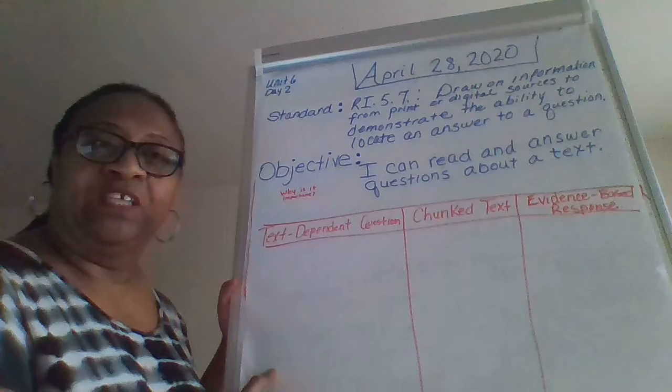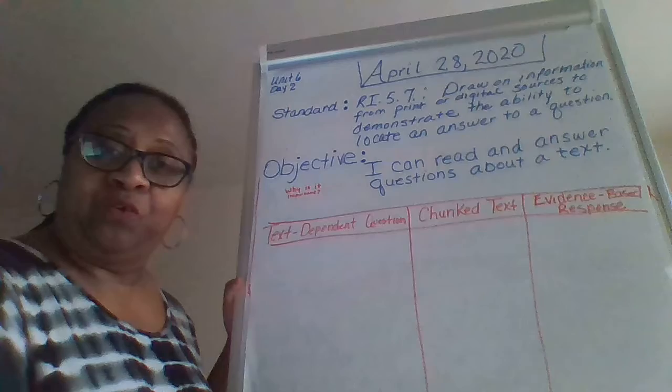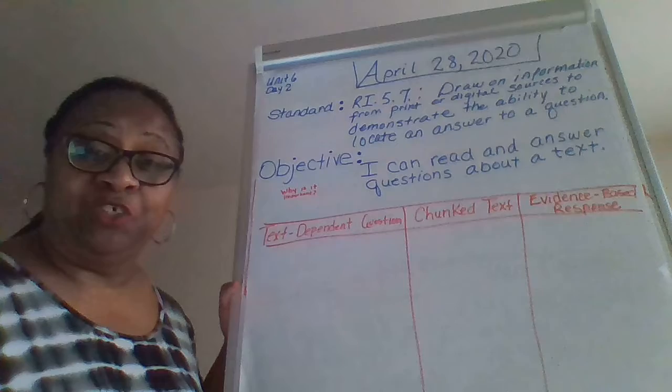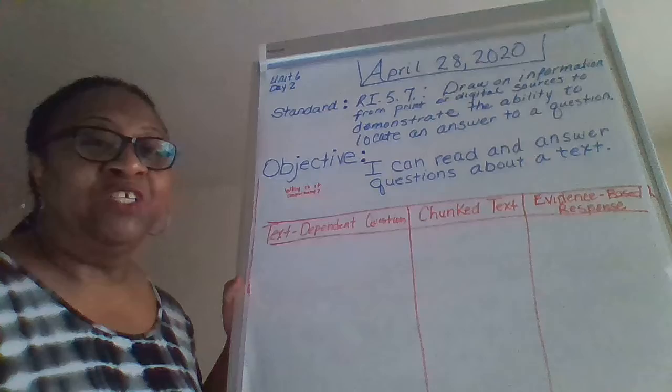Our objective for today is: I can read and answer questions about a text. You're going to be reading a new article today about Lewis Howard Latimer. He was a very famous inventor and I'm sure you're going to enjoy the text — very informative, very interesting.